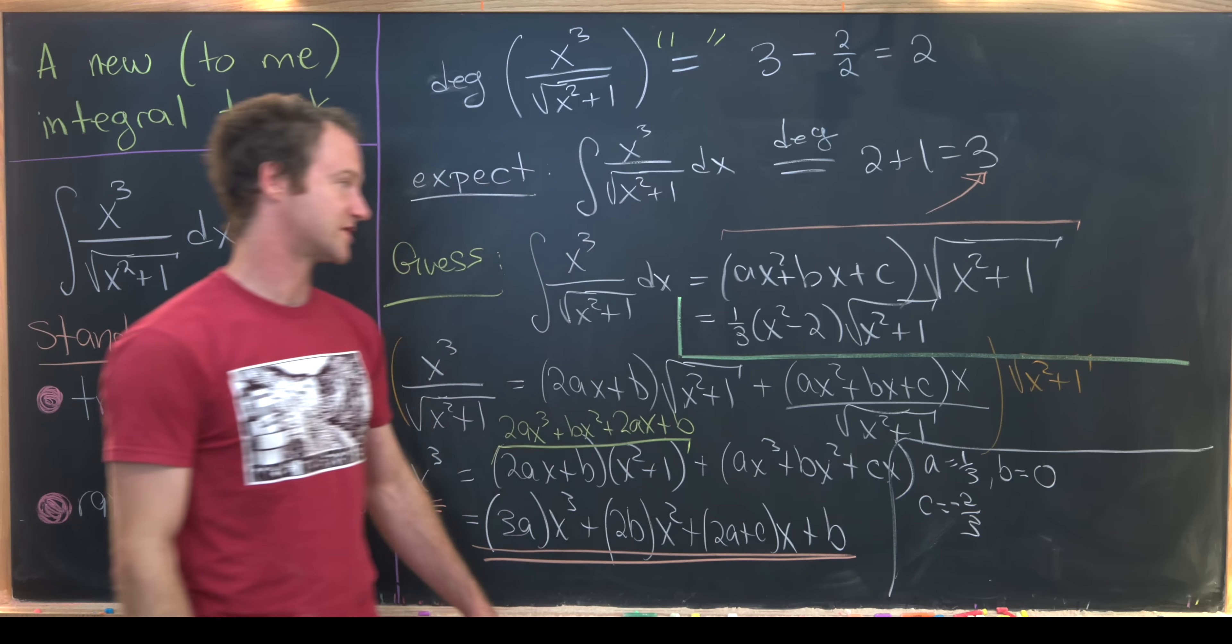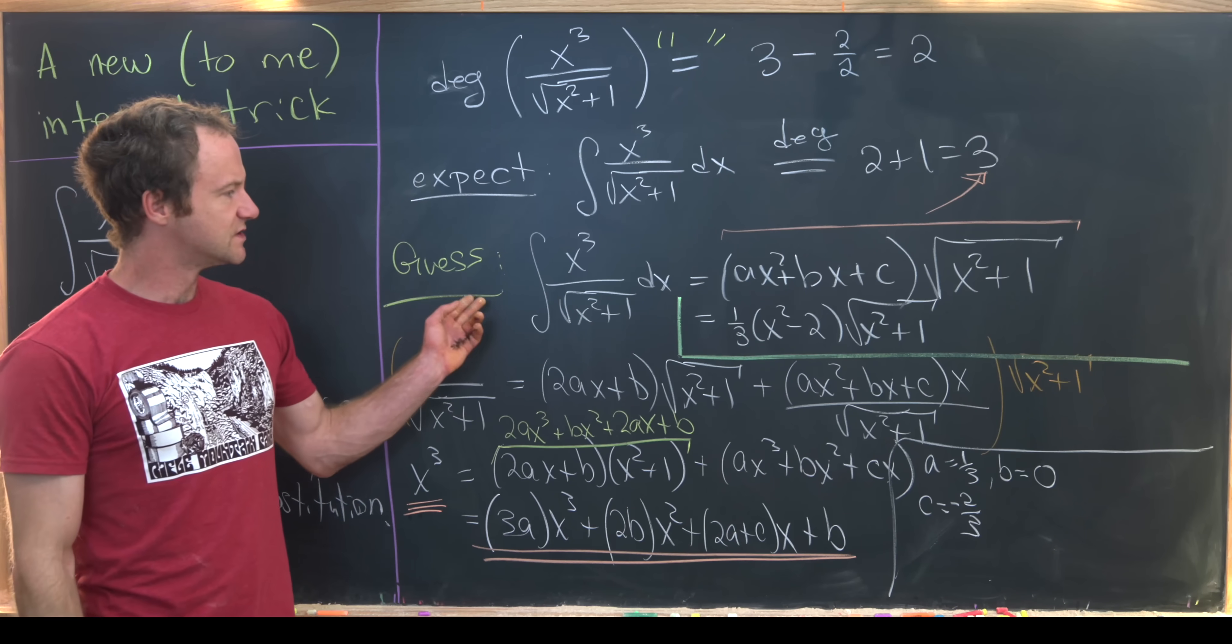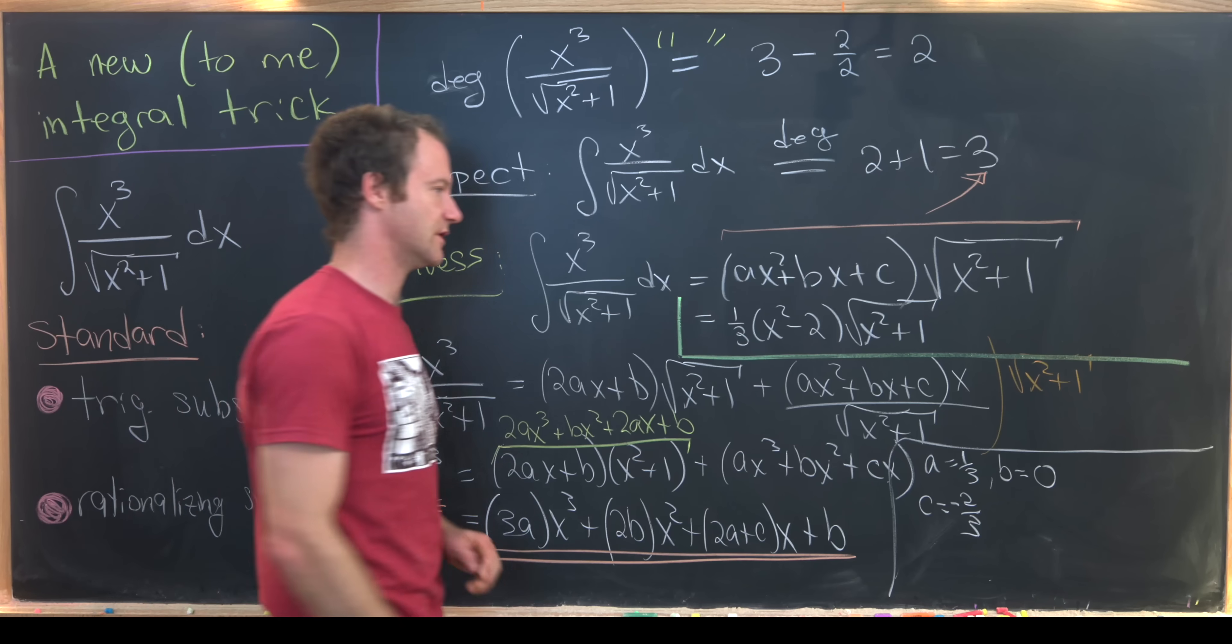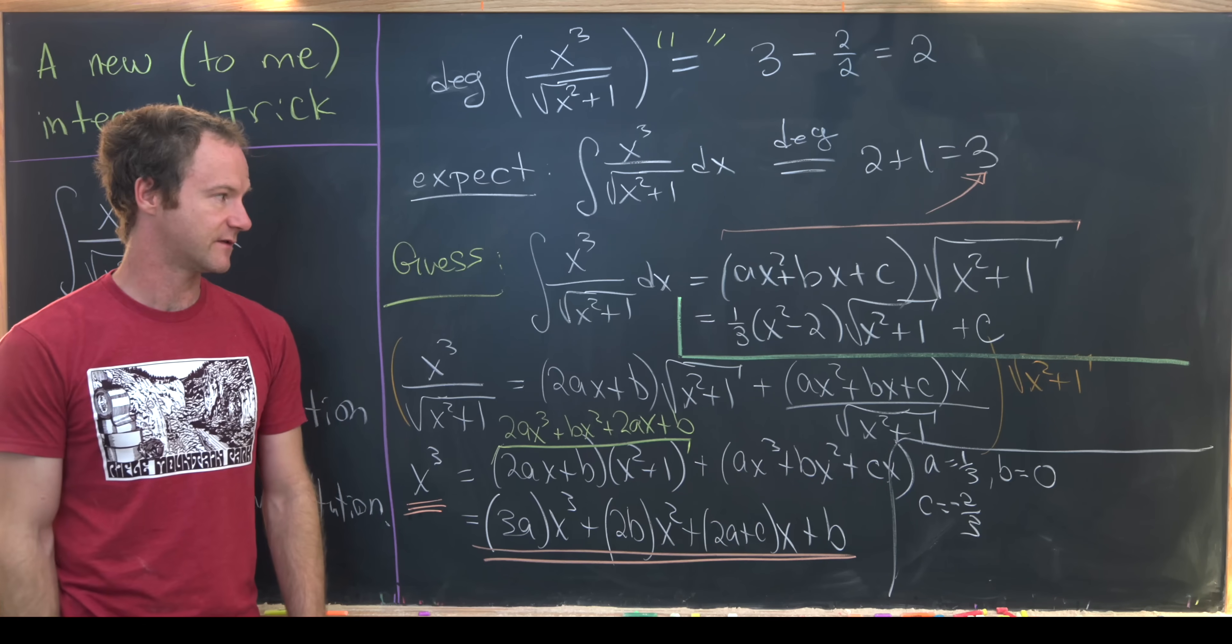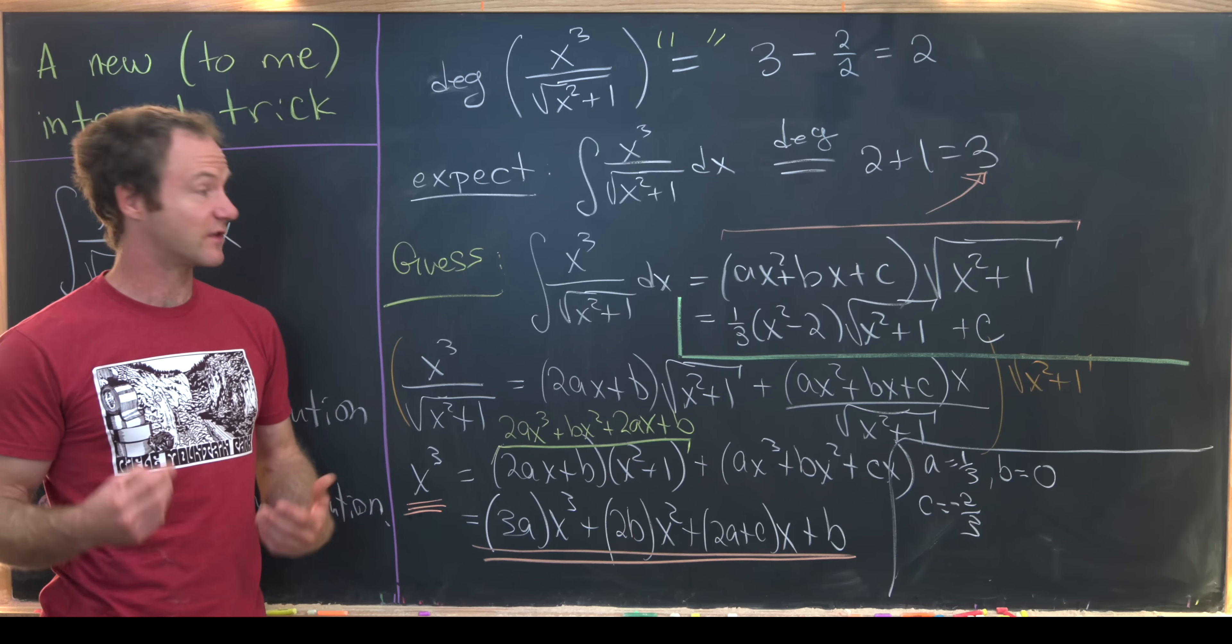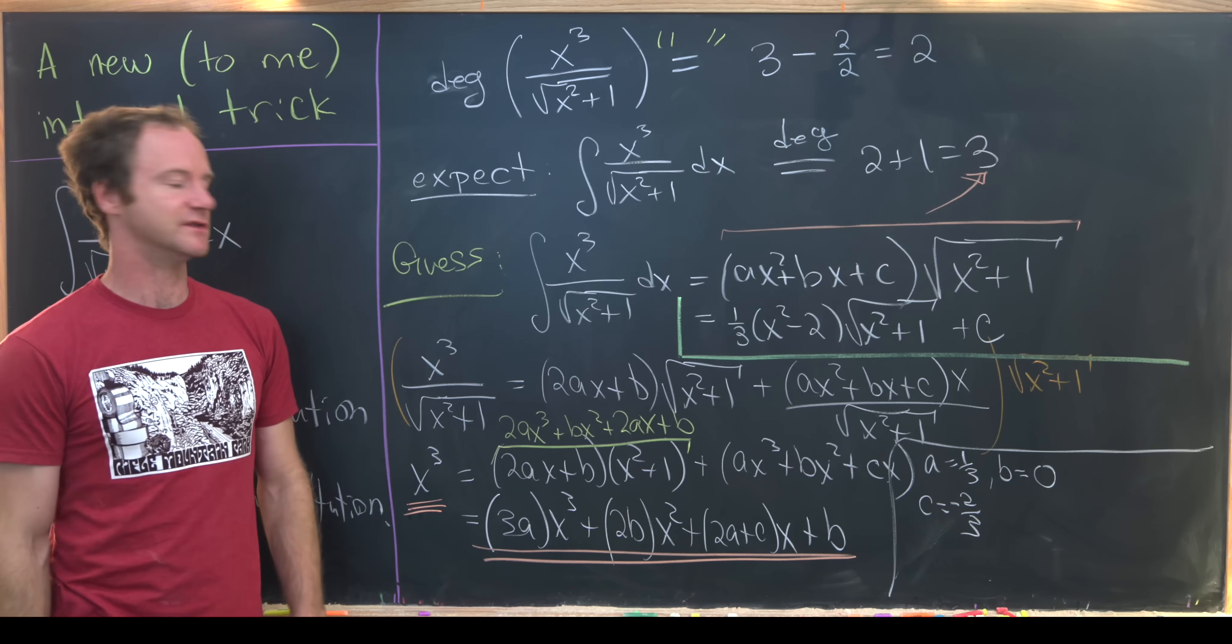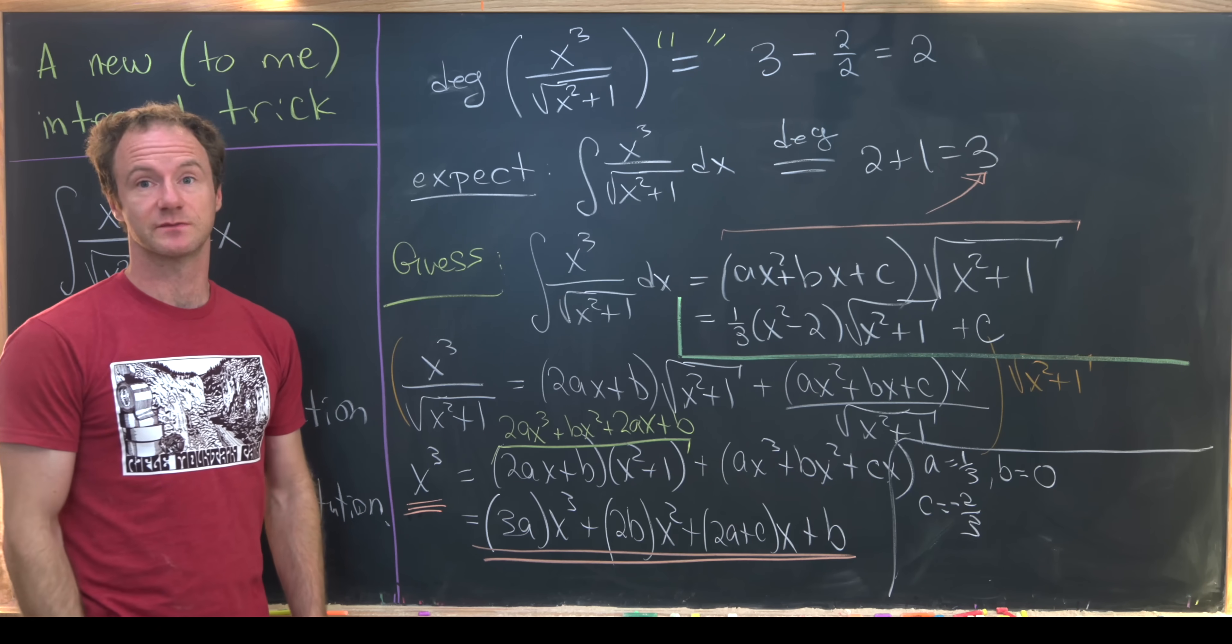I went ahead and factored the 1 third out. And so that's what we have for this anti-derivative. We might as well add the plus c because we have an anti-derivative. And then of course maybe check that by taking the derivative. But I'll let you guys do that if you need to. And that's a good place to stop.